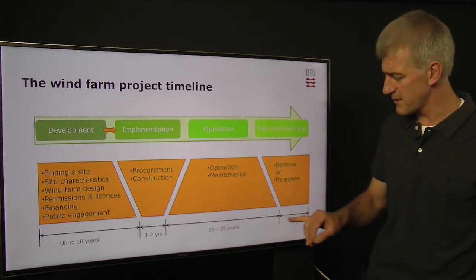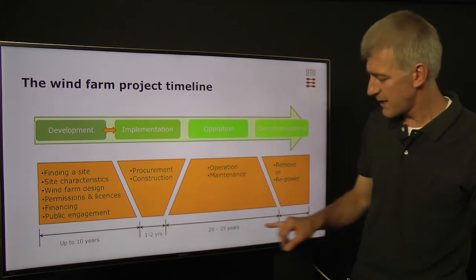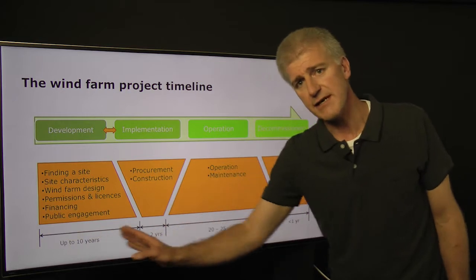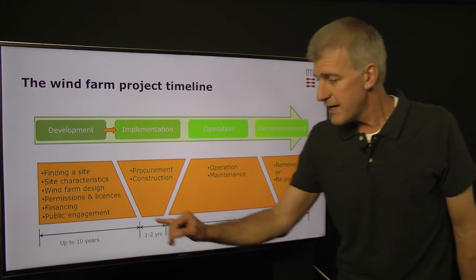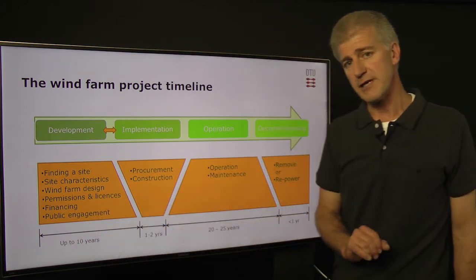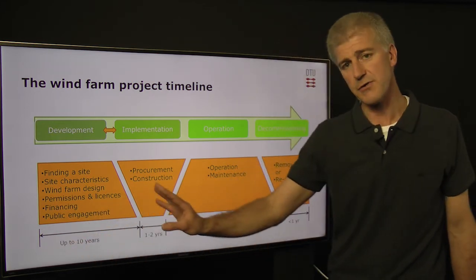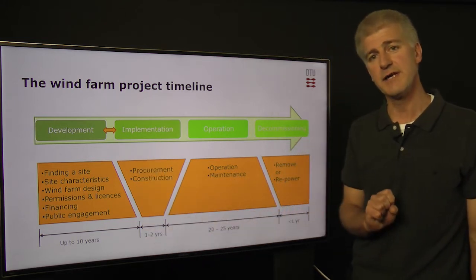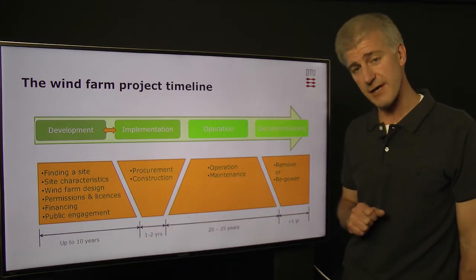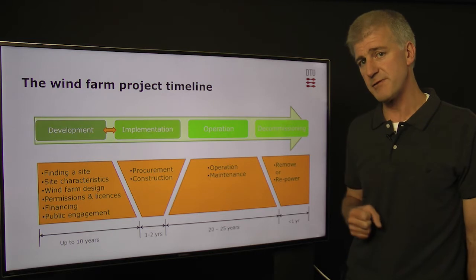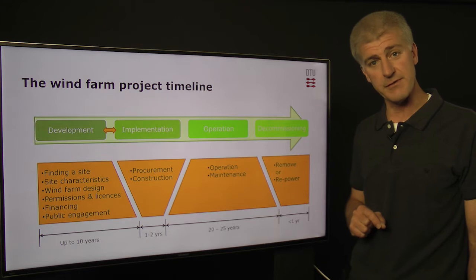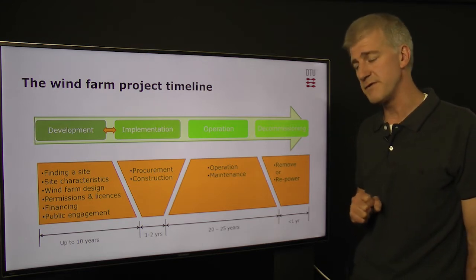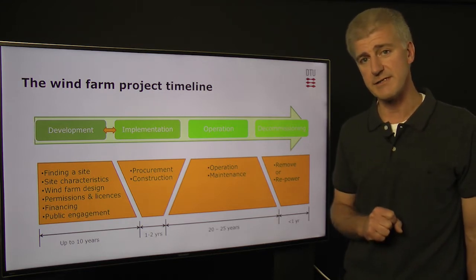So it's interesting to notice down here on the bottom, the timeline here, this phase can take five, maybe up to ten years. And here, you're using your own money. You're really not sure until you get the final permission as to whether the wind farm is going to go ahead or not. This presents a bit of an uncertainty for the financing. So you have to work hard to make sure that the people who are investing in your wind farm know what the uncertainties are.